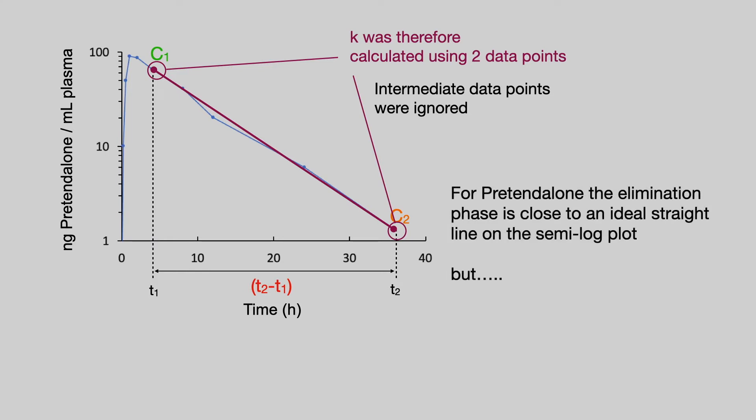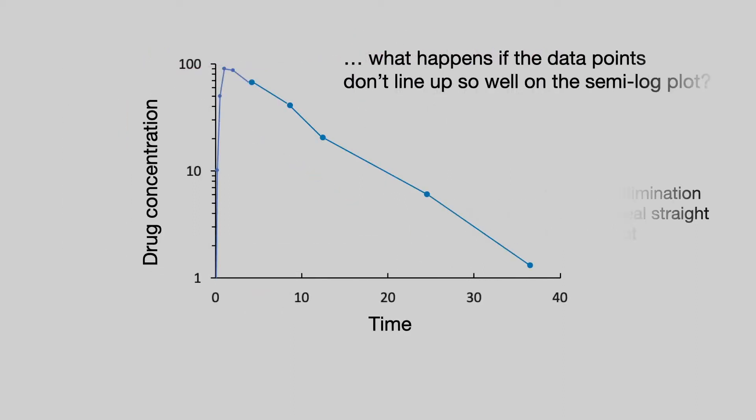The intermediate data points were ignored. Now, for Pretend Alone, the elimination phase is very close to an ideal straight line on the semi-log plot. So using just two data points is probably acceptable. But what happens if the data points don't line up as well on the semi-log plot as they do for Pretend Alone?